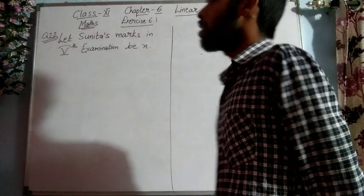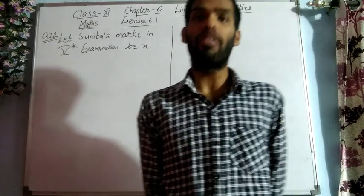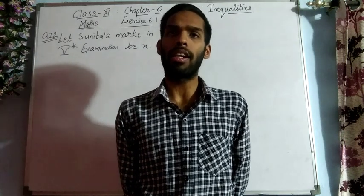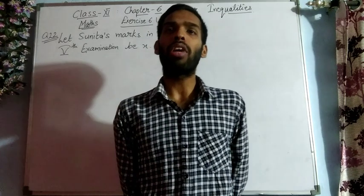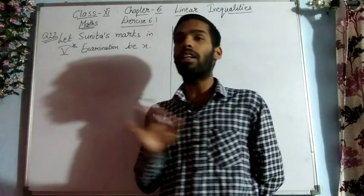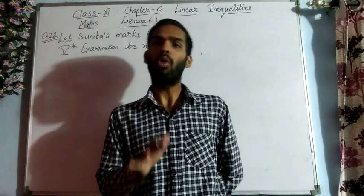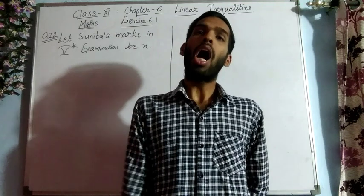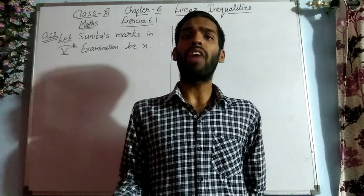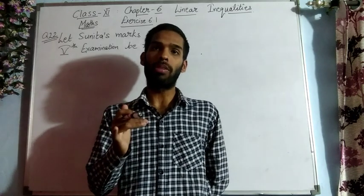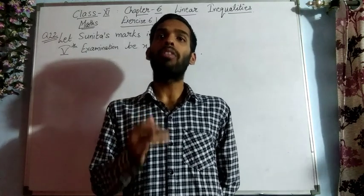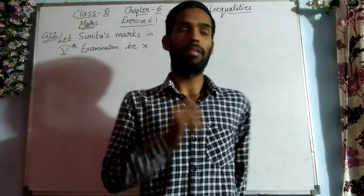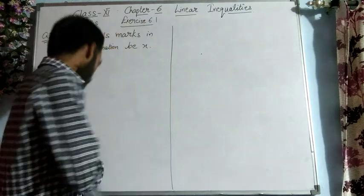One important concept introduced here is the average. You know how to find the average or mean — both are the same. The formula for average is: sum of all observations divided by total number of observations. So here we have five marks — four are given and the fifth we have to find. The average equals sum of all marks divided by total number of marks.